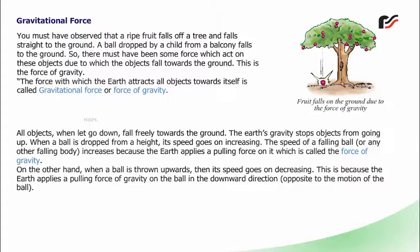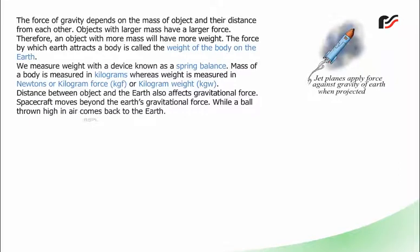When a ball is thrown upwards, its speed goes on decreasing, because the earth applies a pulling force of gravity on the ball in the downward direction, opposite to the motion of the ball. The force of gravity depends on the mass of the object and their distance from each other. Objects with larger mass have a larger force. Therefore, an object with more mass will have more weight. The force by which earth attracts a body is called the weight of the body on the earth. We measure weight with a device known as a spring balance. Mass of a body is measured in kilograms, whereas weight is measured in newtons or kilogram force (kgf) or kilogram weight (kgw).